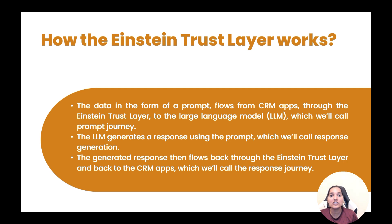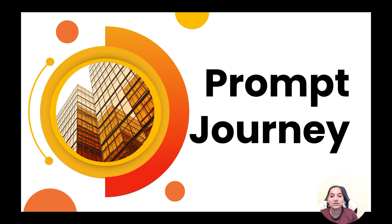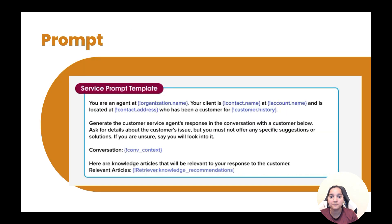Now let's look at an example. This is how our prompt looks. You are using a prompt template with placeholders, saying you are an agent at organization.name. This is the prompt you are sending through the prompt builder. We are going to take a look at prompt builder in the next couple of tutorials, but let's assume this is our prompt template — similar to how you send a prompt to ChatGPT.